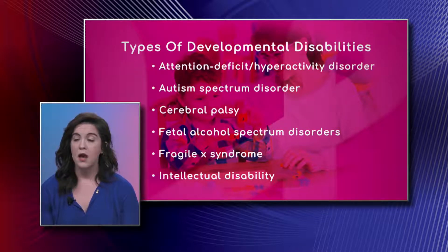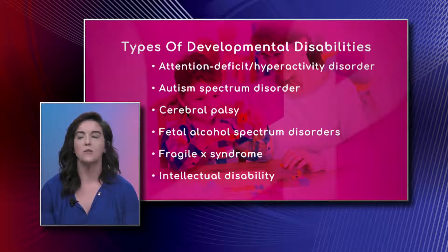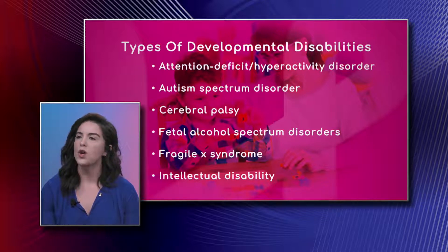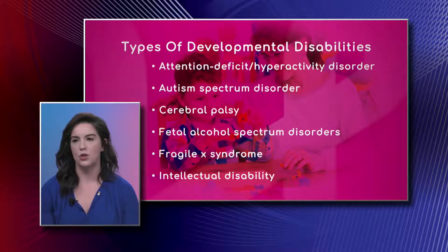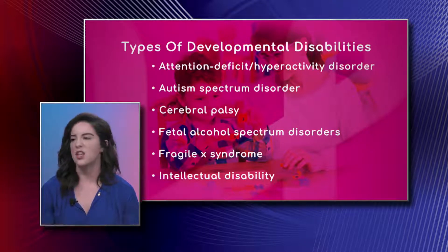Autism spectrum disorder — we see it all the time. PT doesn't see them as often because a lot of the delay is with speech; OT will see them if there's an extreme developmental delay or coordination concerns. Cerebral palsy is neurological and we see it all the time. Fetal alcohol syndrome and fragile X are not as common.